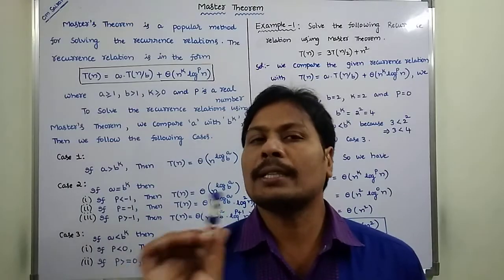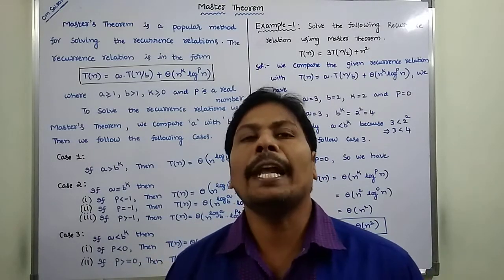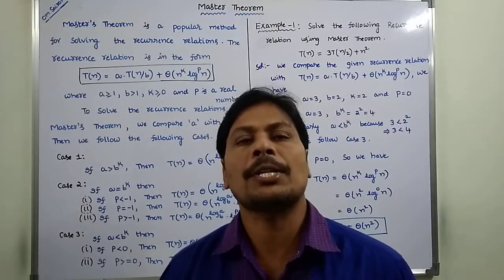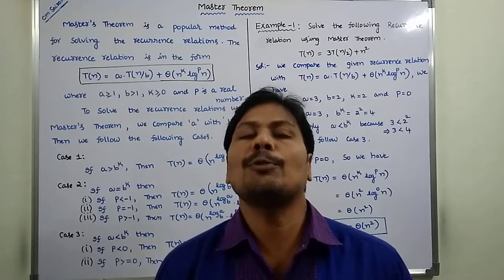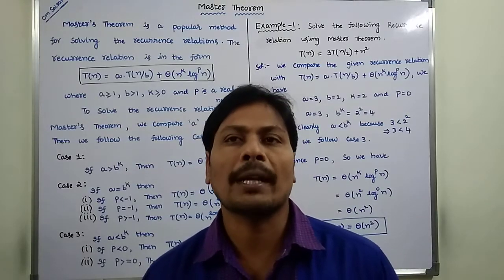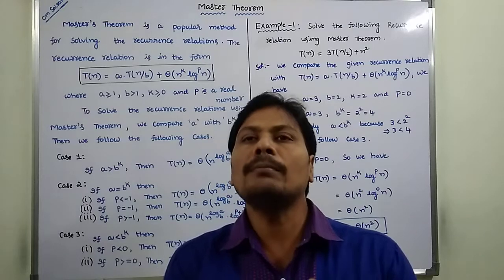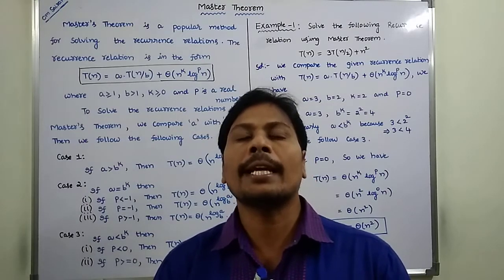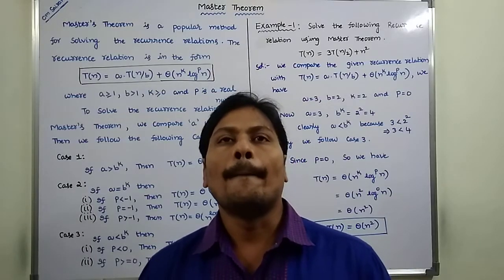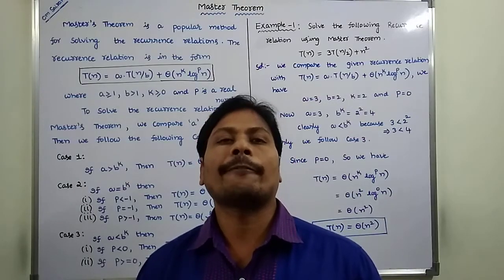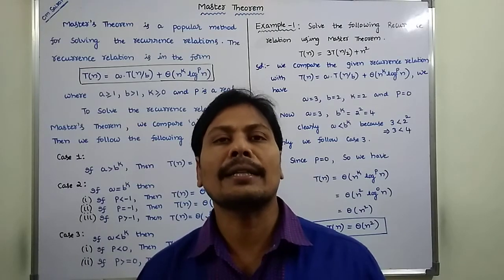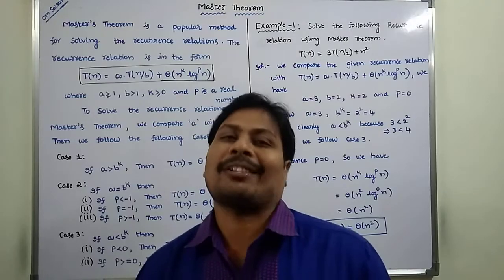The substitution method is also used for finding the time complexity of a given recurrence relation, but substitution method takes more time. To overcome that disadvantage, we use the Master Theorem to find the time complexity of a given recurrence relation in less time.